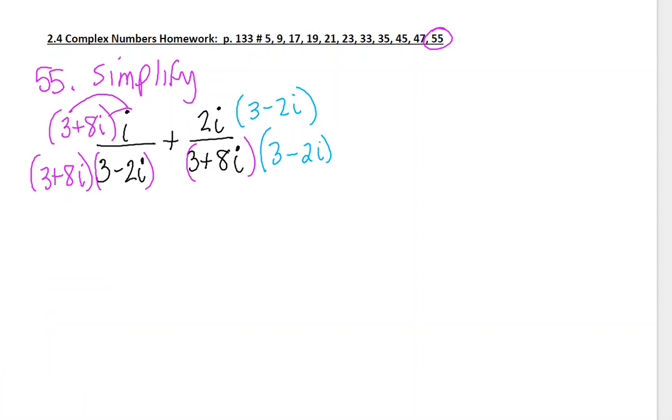So I'm going to backwards distribute this. I get 3i plus 8i squared over—I have to distribute this all the way through—so 9 minus 6i plus 24i minus 16i squared.